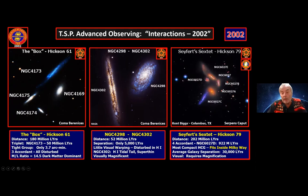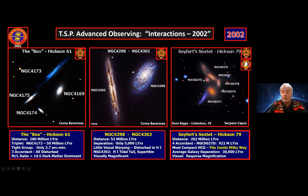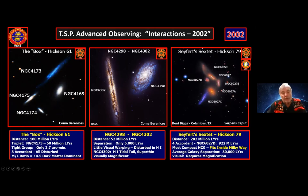Seyfert's Sextet — Hickson 79 — is another of Paul Hickson's finest. Not everything in the field is part of the group: only four of the galaxies are at the same distance and interacting. One is debris thrown out of another galaxy. Notably, NGC 6027d has a stated distance of 922 million light years while the rest are 202 million light years away — several orders of magnitude more distant, yet interestingly it shows more detail than the closer objects.